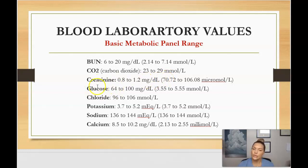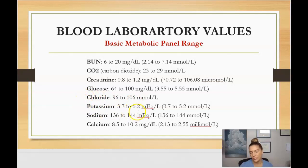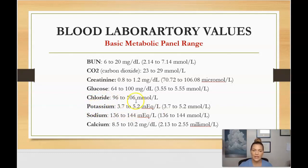Fasting glucose of 64 to 100 is normal. Chloride is 96 to 106. Potassium is 3.7 to 5.2 — potassium is also watched very closely. Patients on diuretics can see their potassium drop very low very quickly, so that's a number to watch. Sodium is 136 to 144, and calcium is 8.5 to 10.2.